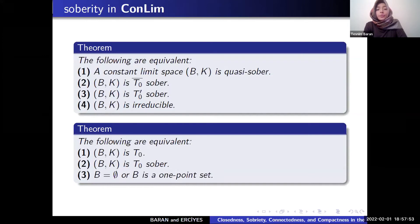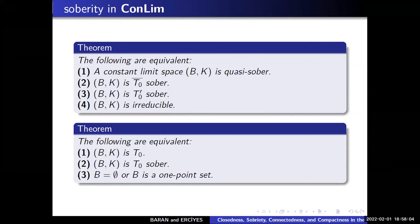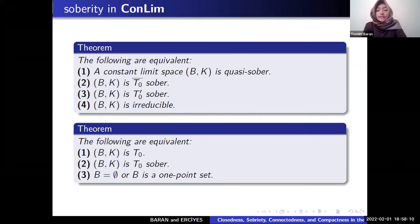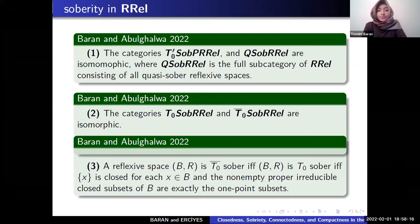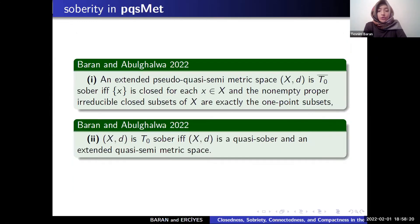And we proved the following are equivalent. A constant limit space (B,K) is quasi-sober, T0 bar sober, T0 prime sober, irreducible. And the following are equivalent: T0 bar, and B is T0 bar at a one point set.